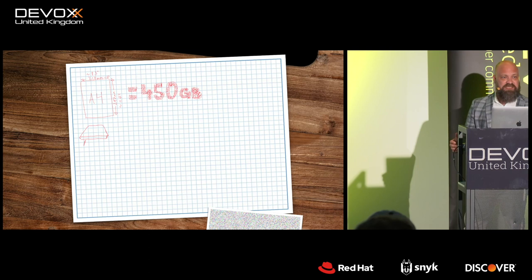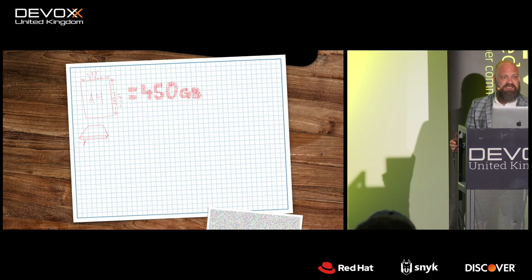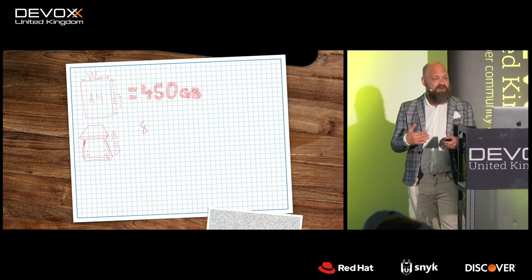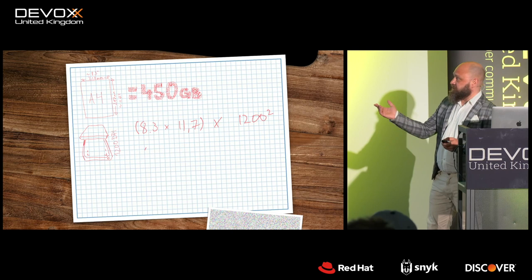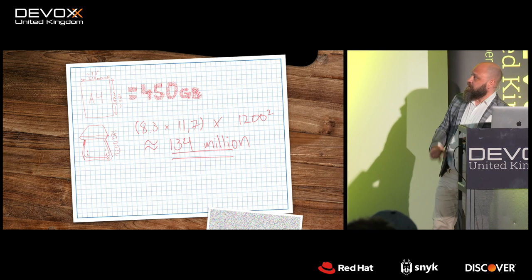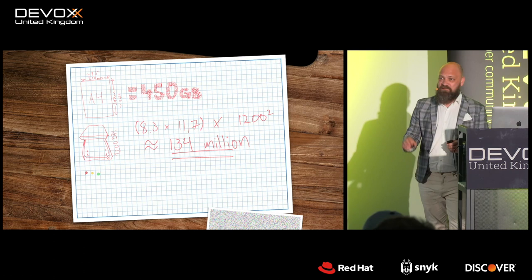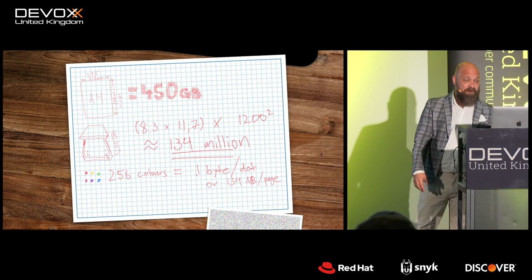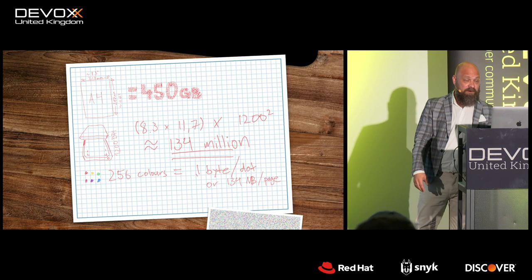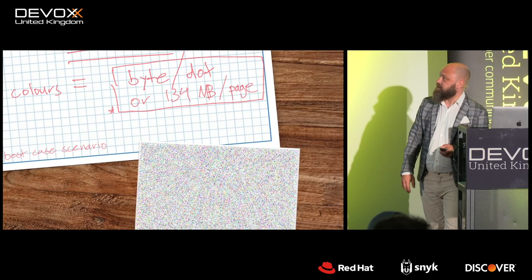On this piece of paper, we would store 450 gigabytes of data. Let's do the back-of-the-envelope math: with a state-of-the-art flatbed scanner at 1200 dots per inch, we can have 134 million individual dots on a piece of paper printed full-bleed edge to edge. And if we have a very good printer that can produce 250 different colors, that would give us one byte per dot, or 144 megabytes per page. That's pretty good — it's the theoretical maximum, though.